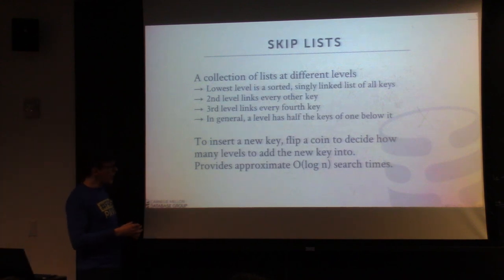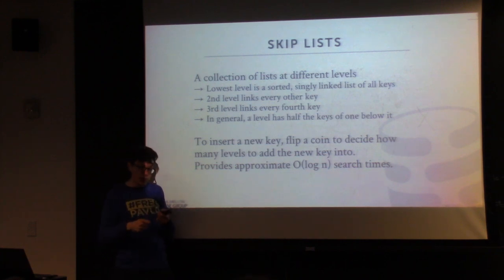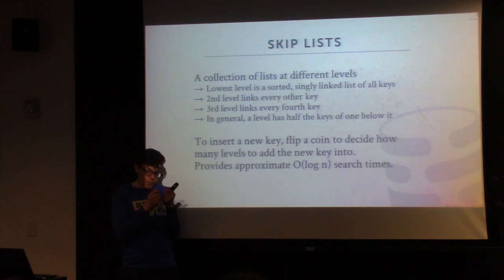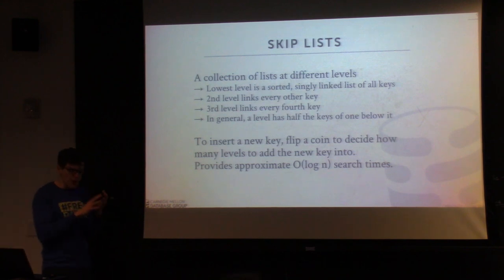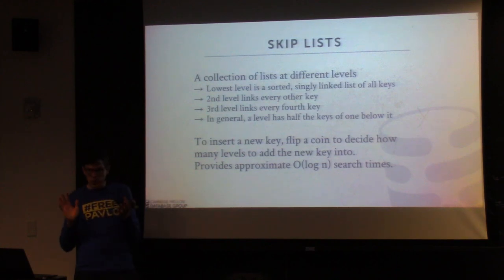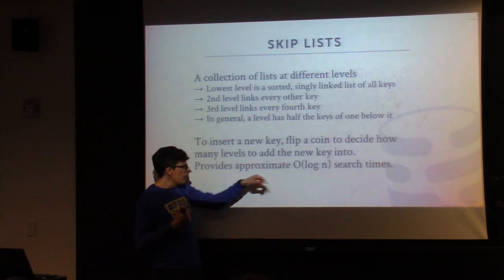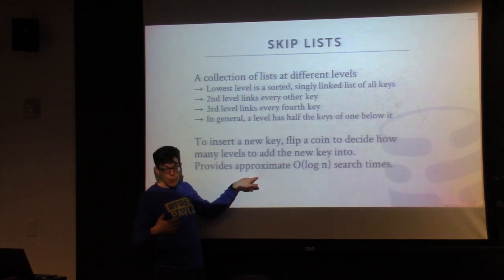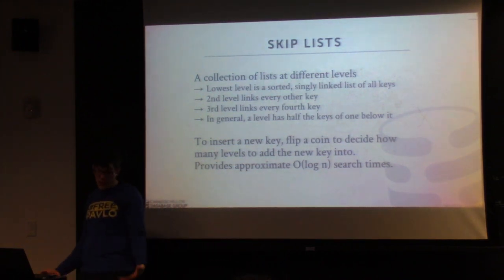To insert a new key, you flip a coin. You always insert at the lowest level, but then you decide whether to go into the second level — flip a coin, if tails you don't, if heads you add an extra pointer. If heads again, flip again; if heads again, add another. Keep going until you finally get tails. This is why it's a probabilistic data structure — we don't have to know exactly ahead of time where to put these extra pointers. The skip list provides lookups in approximately O(log n), and in practice this holds on average.